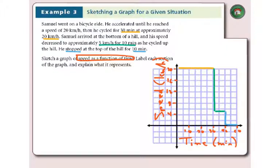The last thing I need to include on this graph is a title. Title should be descriptive. Doesn't need to be anything fancy. If we call this Samuel's Bike Ride, that would be descriptive enough for us to know exactly what was going on.